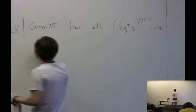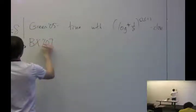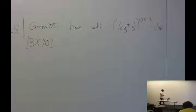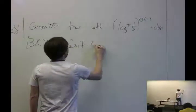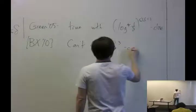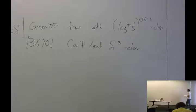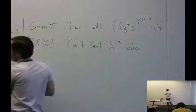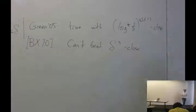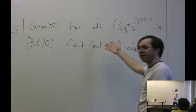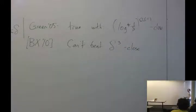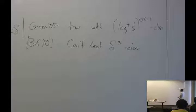On the other hand, the best result in the other direction is due to Bhattacharya and Shih from 2010: you can't beat delta to the 0.3 close. They construct a set A which has this property but is not especially close to a truly triangle-free set — you have to delete this fraction of elements. This is a great problem because it's a very simple statement and there's a ridiculously enormous gap between the upper and lower bounds, much worse than what we had even before Sanders' theorem in polynomial Freiman-Ruzsa.